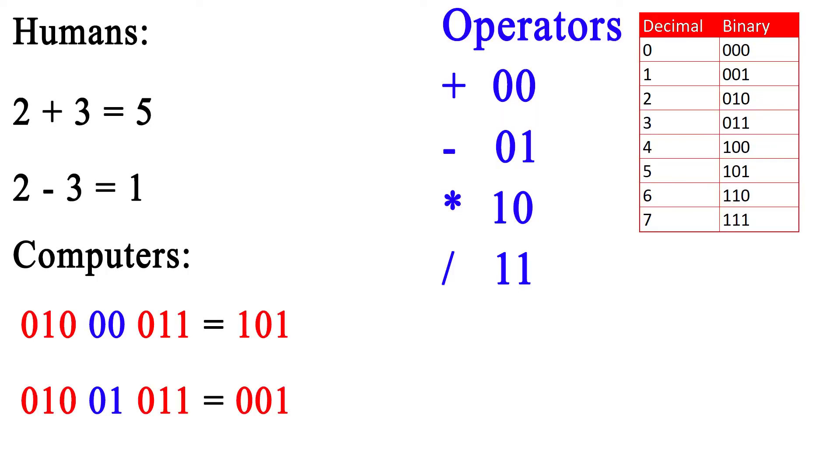We can store all data types — images, text, audio, and video — as digital data. We can also store instructions. For example, we can add 2 and 3 together. We can store decimal numbers — they become binary in the computer.